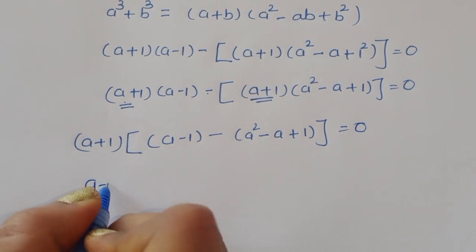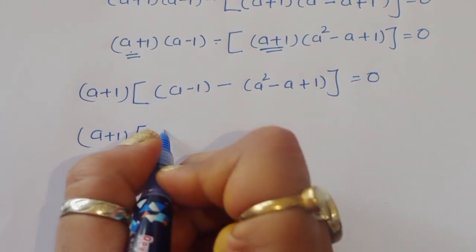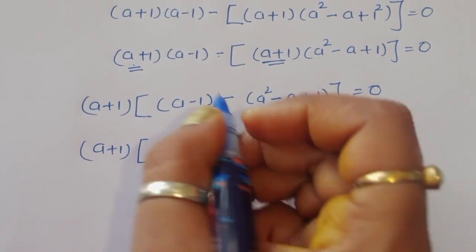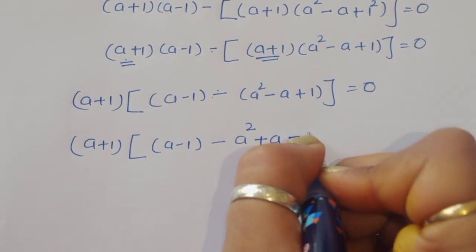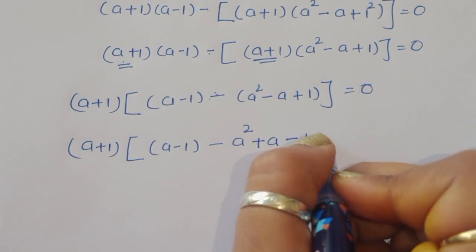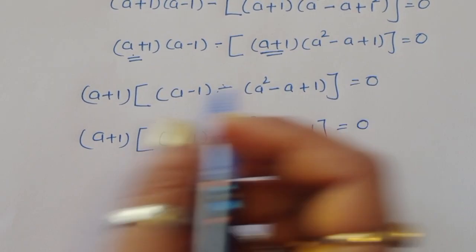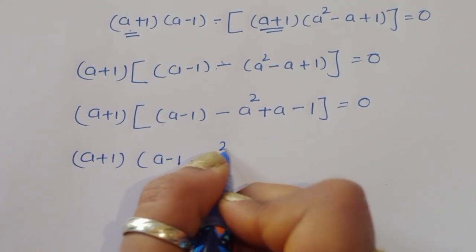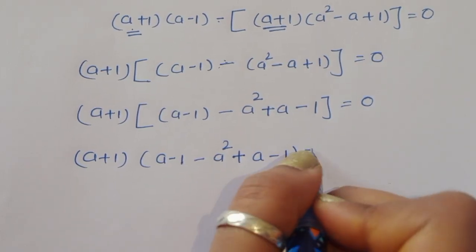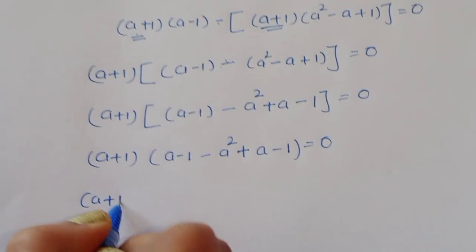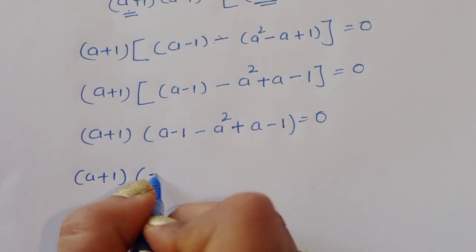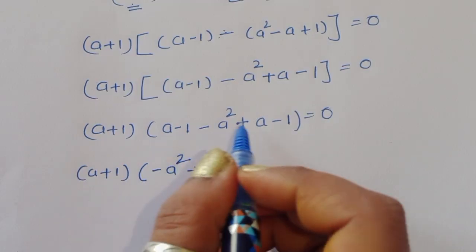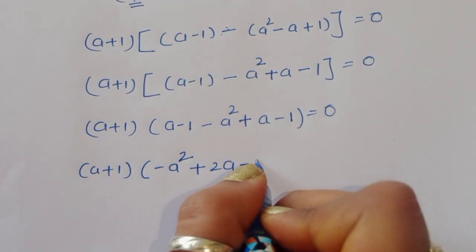Taking (a + 1) common: (a + 1)[(a − 1) minus (a squared minus a plus 1)] equals 0. Opening the bracket: (a + 1)(a minus 1 minus a squared plus a minus 1) equals 0, which simplifies to (a + 1)(minus a squared plus 2a minus 2) equals 0.